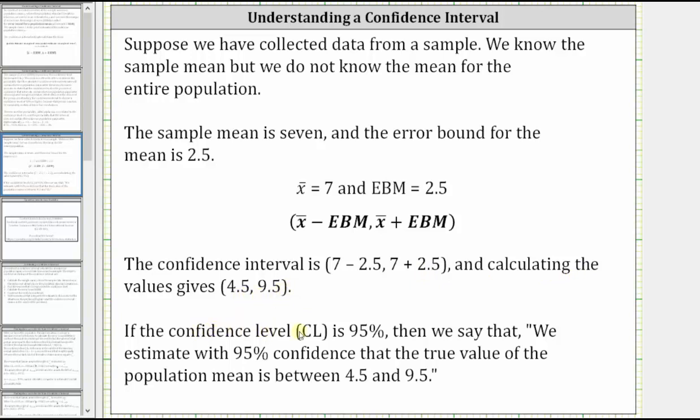If the confidence level is 95%, then we say that we estimate with 95% confidence that the true value of the population mean is between 4.5 and 9.5.